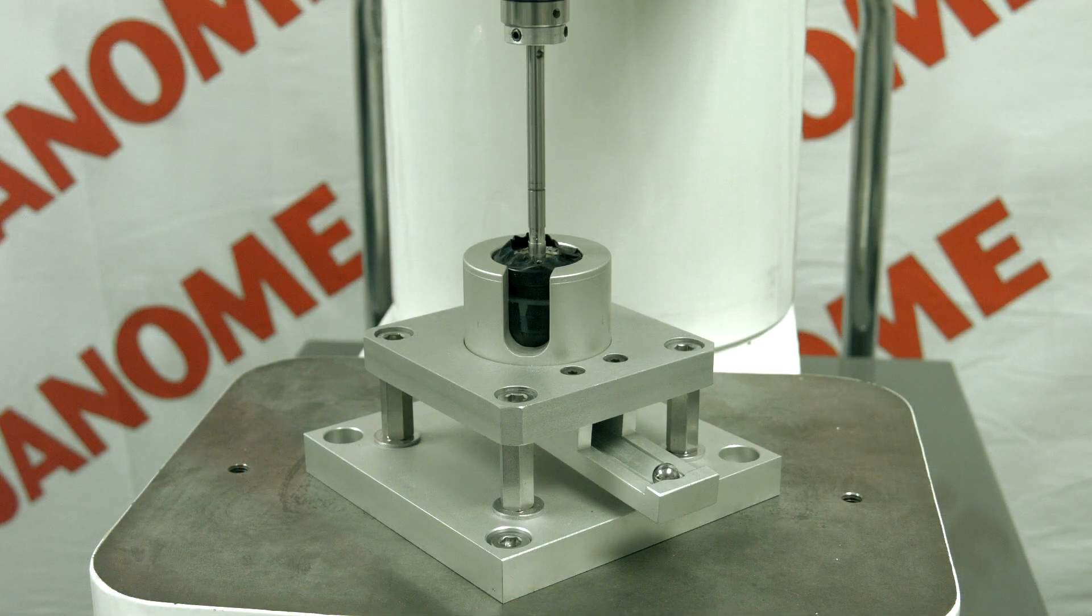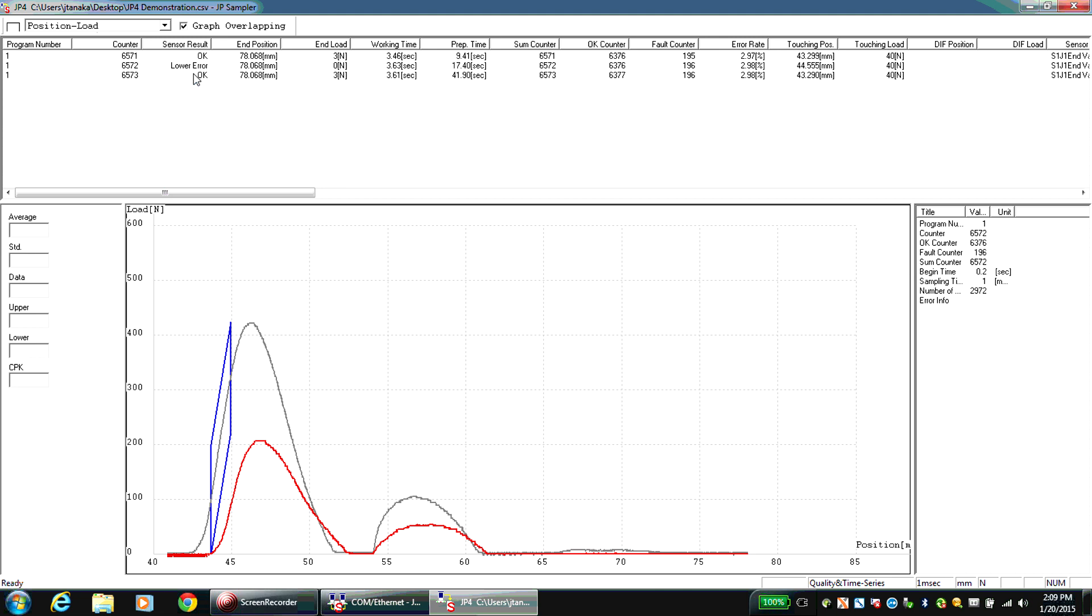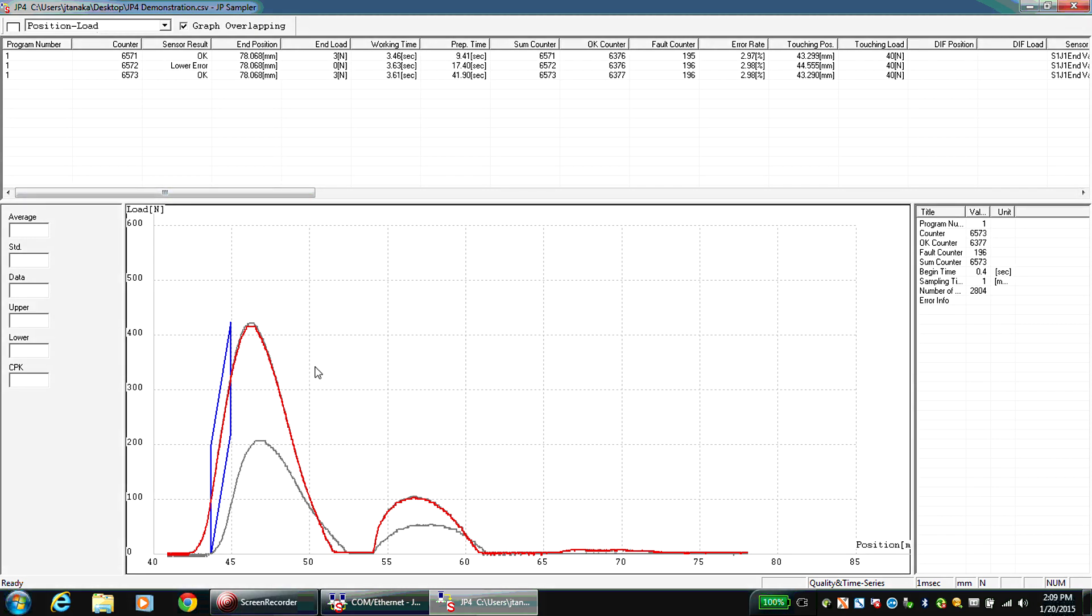When the standard ball bearing is reloaded, the sensor conditions are met. In JP Sampler, the red line representing the most recent graph data is updated. Use these sensors to specify your quality control.